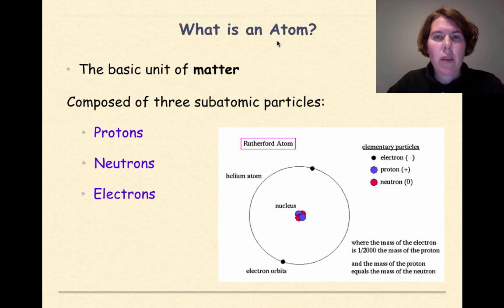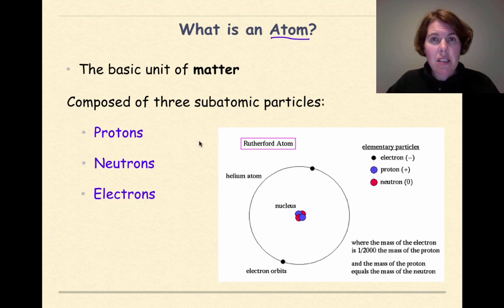Now what is an atom and knowing what an atom is is very important. An atom is defined as the basic unit of matter. Everything is composed of atoms. You're composed of atoms. The chair that you might be sitting on is composed of atoms. The things that we eat are composed of atoms. Pretty much everything that exists around us is composed of atoms.